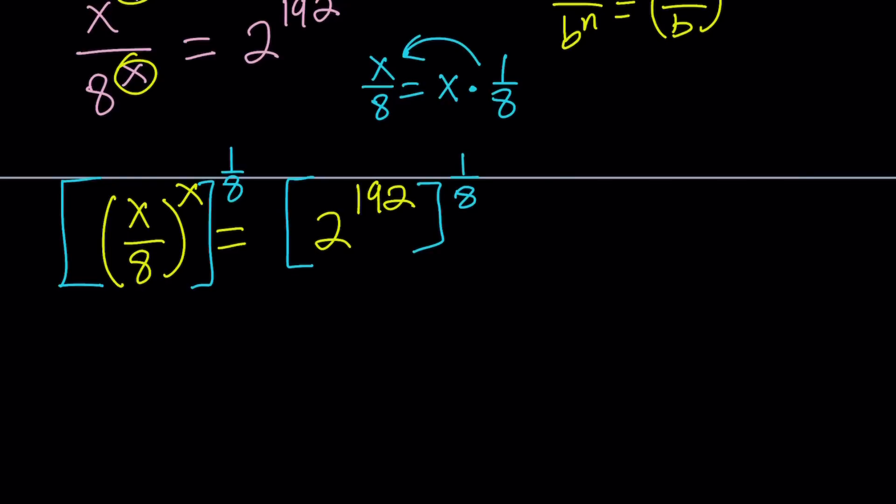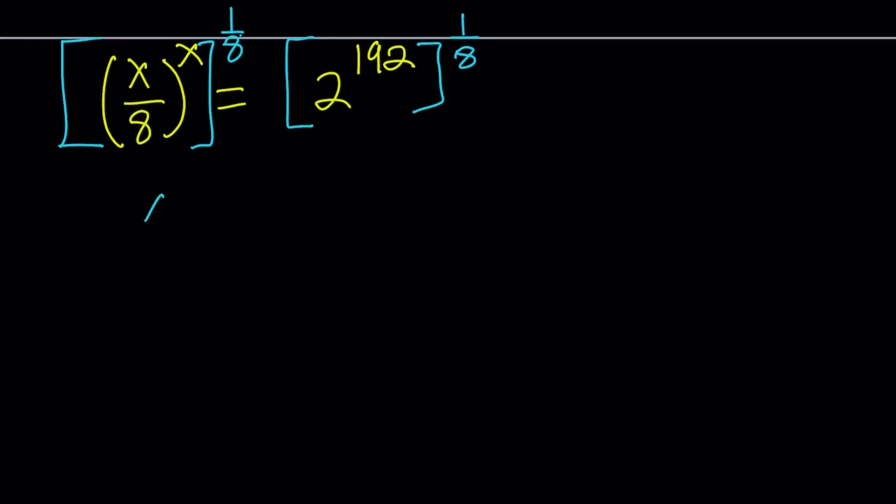And then x and 1 over 8 is multiplied, and that's going to give us x over 8 to the power x over 8. Now that's good. And on the right-hand side, I'm going to have 2 to the power of 192 times 1 over 8.